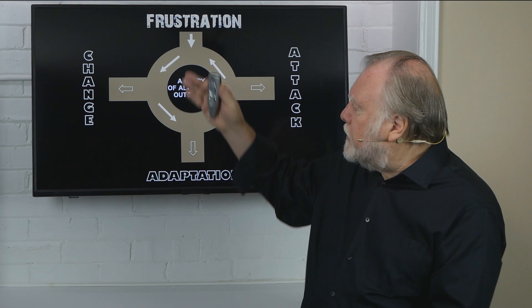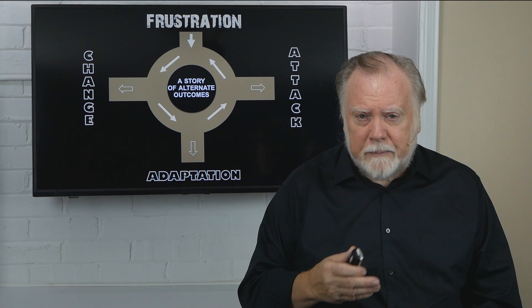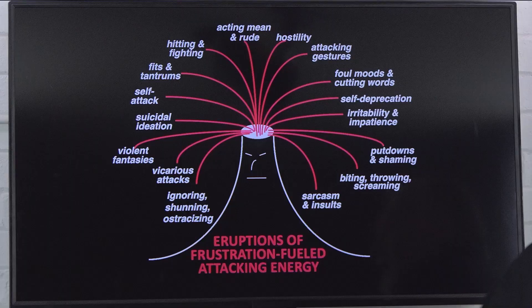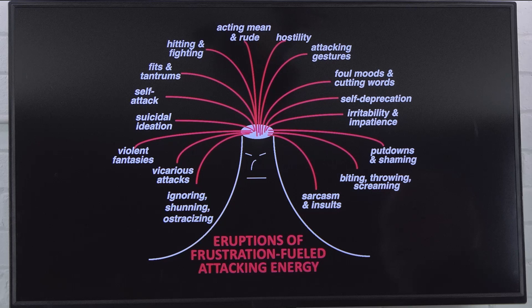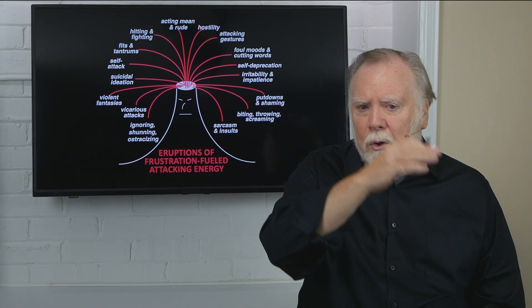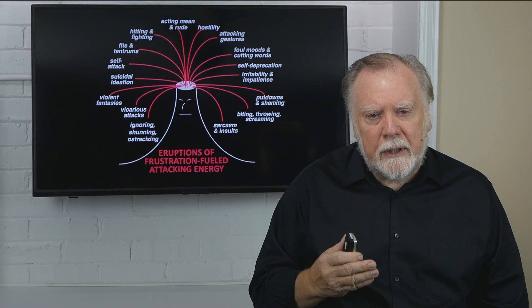Now, the release of these attacking impulses of foul frustration, or failed frustration, or thwarted frustration, can take many forms. And I've outlined those forms here. As you can see, there are many forms: sarcasm and insults, irritability and impatience, hitting and fighting, fits and tantrums, violent fantasies, even ignoring, shunning, and ostracizing. I won't take the time to go over all of them. You get the picture.